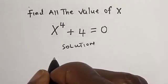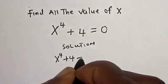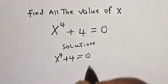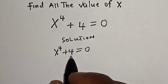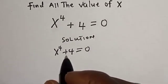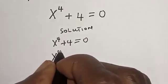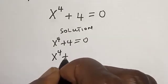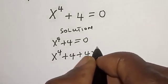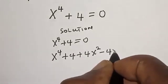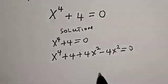We have the given equation x raised to power 4 plus 4 is equal to 0. Let's try and manipulate this by adding and subtracting 4x squared from the equation.